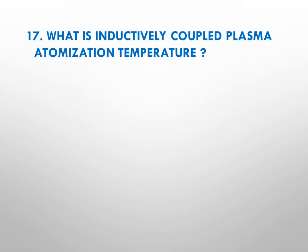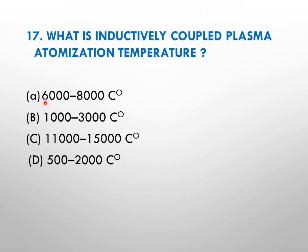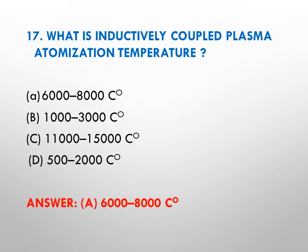Question number seventeen: what is the inductively coupled plasma atomization temperature? Options: A 6000 to 8000 degree centigrade, B 1000 to 3000 degree centigrade, C 11000 to 15000 degree centigrade, D 500 to 2000 degree centigrade. The right answer is A — the temperature provided by inductively coupled plasma ranges between 6000 to 8000 degree centigrade.